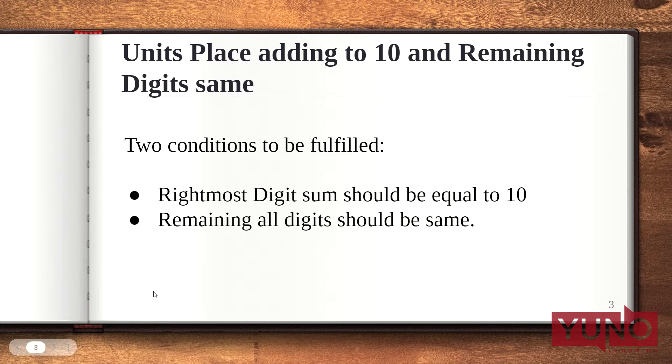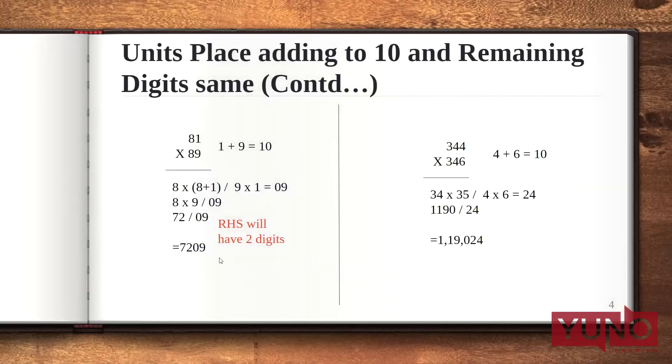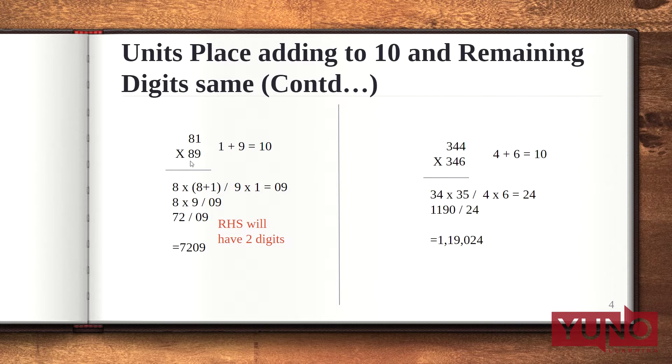Let us understand this method with the help of an example. The first is when we want to multiply 81 with 89. Now here the leftmost digits are same, that is 8, and the rightmost digits give a sum of 10, that is 1 plus 9 equals 10.